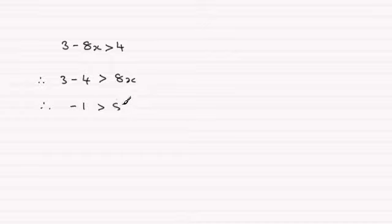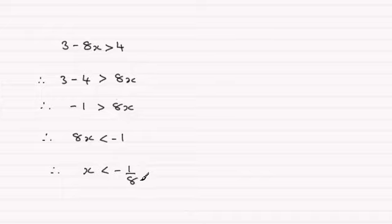You could reverse this round. You could have 8x then is less than minus 1, and if you divide both sides by 8, you therefore have x is less than minus 1 eighth.